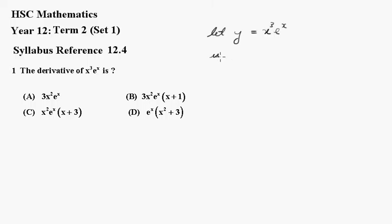We'll let u equal x cubed and v equal e to the x. So du equals 3x squared and dv equals e to the x.